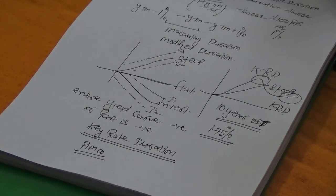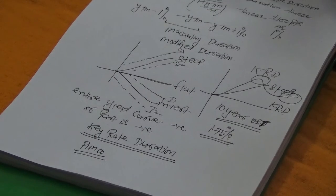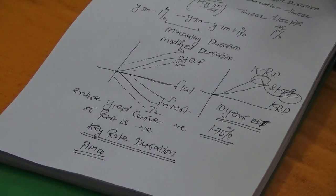Maybe five or two years down the line, you might have a yield curve where everything is negative — to an extent I can replicate the example of Tokyo. In that regard, key rate duration may or might not matter because you would see a parallel shift in the yield curve. Key rate duration is used when you don't have a parallel shift in the yield curve. Now, how do we calculate key rate duration? It is very simple; the formula is similar to effective duration.